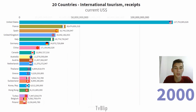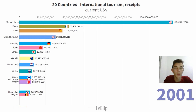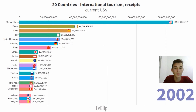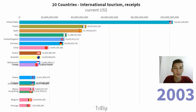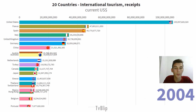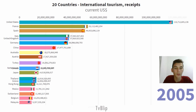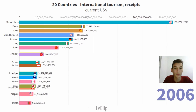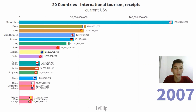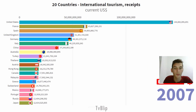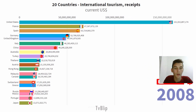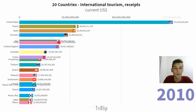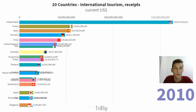International tourism receipts are the expenditures by international inbound visitors, including payments to national carriers for international transport. These receipts include annual payments made for goods and services received in the destination country. They also include receipts from same-day visitors, except when it is important to justify a separate classification. For some countries, they do not include receipts for passenger transport items.